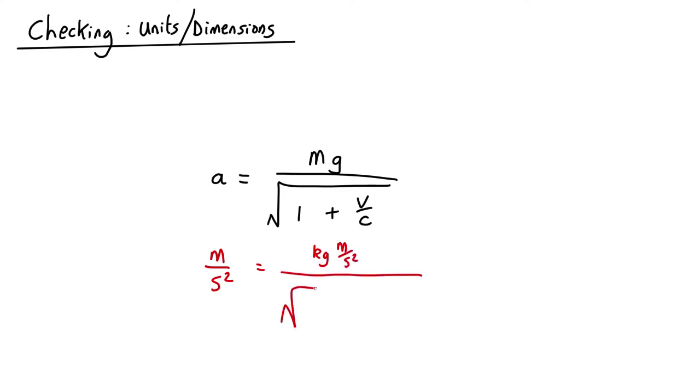And you've got root 1 plus velocity, which is in meters per second, and c is speed of light also in meters per second.